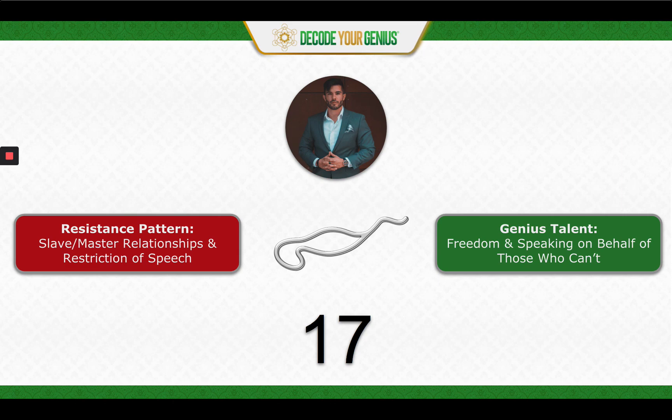An important key part of breaking free from those relationships is using your speech — speaking up first for yourself. As a person does that with the 17, they speak up for what they need, they speak up about the imbalance of power. Then they're able to claim their freedom and speak later on on behalf of those who can't.